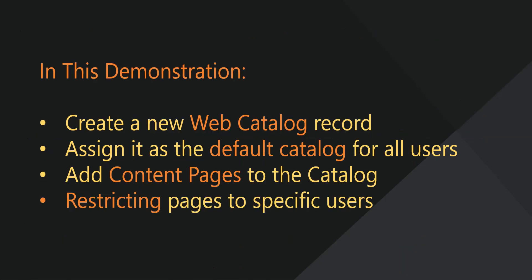For our example, we'll create a new catalog record and then assign it as the default catalog for users to see when they log in. Keep in mind, our initial catalog is going to be empty until we demonstrate how each of the content pages work. Then we'll demonstrate adding pages to the catalog and finally restricting them for specific users.